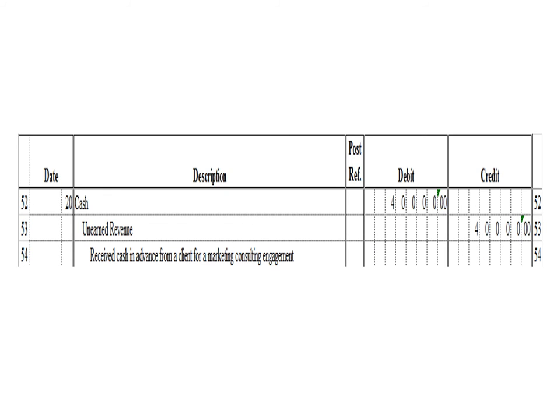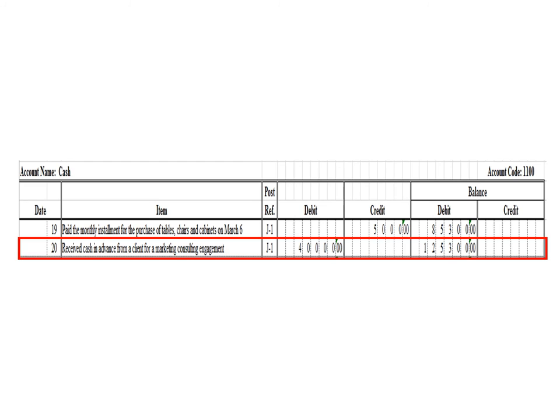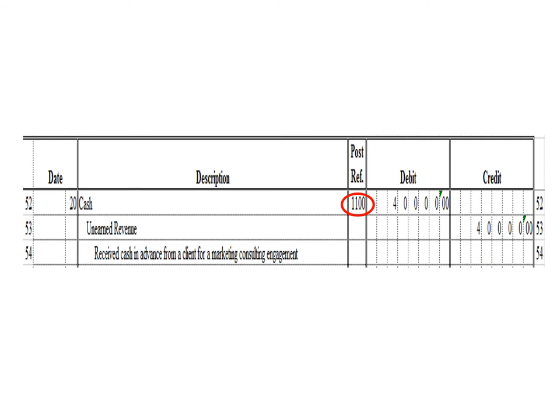Next transaction: a debit to cash for 40,000 pesos and a credit to unearned revenue 40,000 pesos. In the cash ledger, we write date 20, description: receive cash in advance from a client for a marketing consulting engagement, posting reference J1. Under the debit column, write 40,000 pesos. The balance is 125,300 pesos — previous debit balance 85,300 plus 40,000 debit. As of March 20, the cash ledger balance is 125,300 pesos debit. After posting, write posting reference 1100.